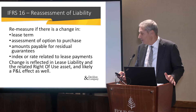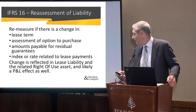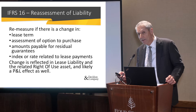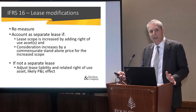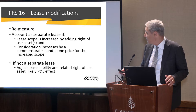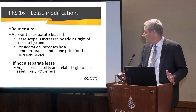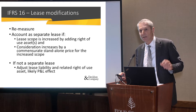Watch out for reassessments. You reassess if there's a change in term, a change in assessment of your option to exercise or not, amounts payable for residual guarantees, or an index rate change — and the effect will be on your asset and lease liability, with a potential P&L effect as well. For lease modifications, you remeasure as soon as there's a modification. You must determine if you have a separate lease or not. A separate lease arises if you get new assets and new liabilities and the consideration increases by a commensurate amount. If it's not a separate lease, you adjust the liability, asset, and related amortization and accretion.